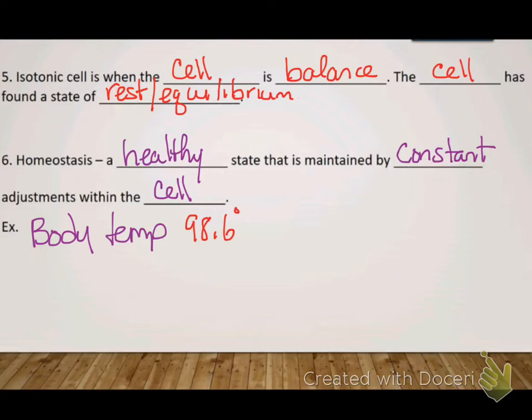So 98.6 degrees is our homeostatic temperature — it wants us to be there, balanced.